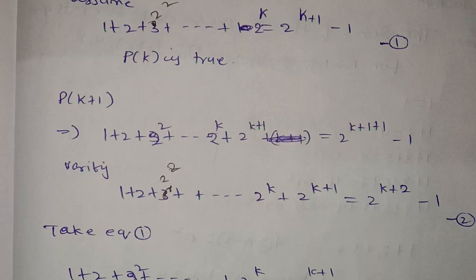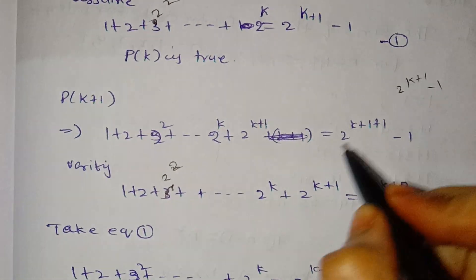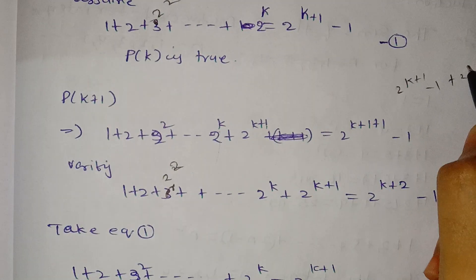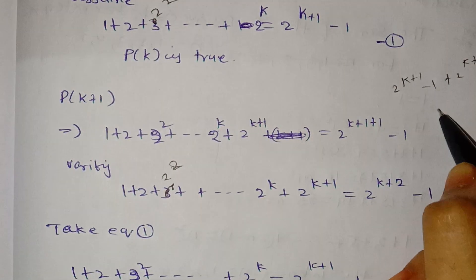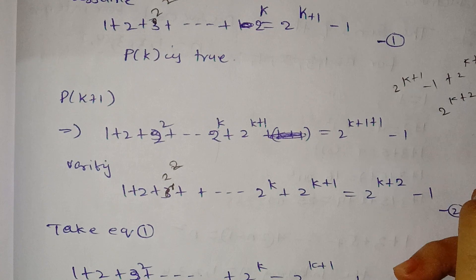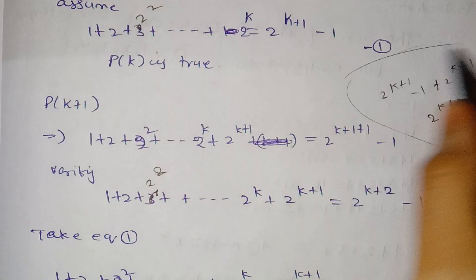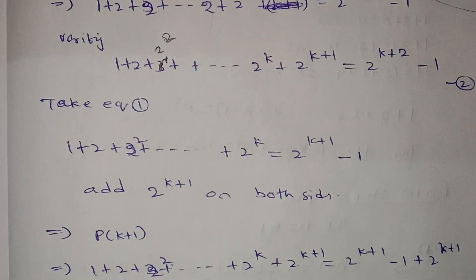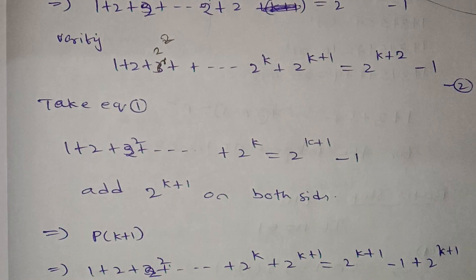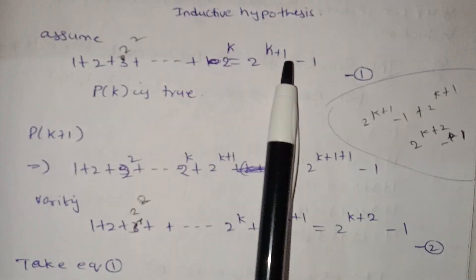Remember this step. Now taking equation 1: 1 + 2 + 2² + ... + 2^k = 2^(k+1) − 1. We use this equation 1 in our proof.